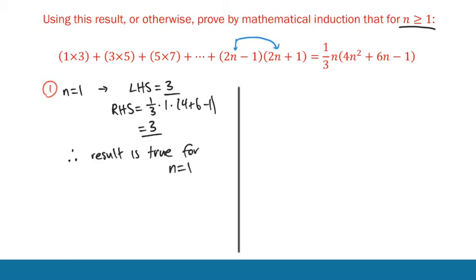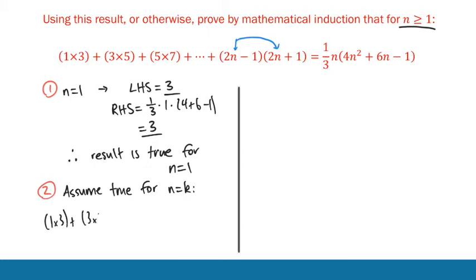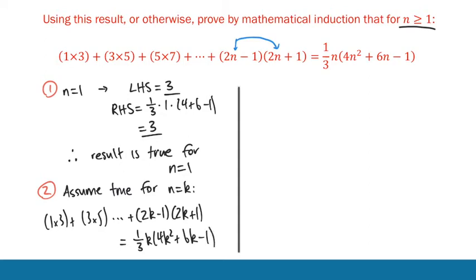Step 2: assume the result is true for n equals k. All you do is write that — 'assume true for n equals k' — and write the result out with k substituted in place of n. This is just representing that k is a general value. As long as it's bigger than or equal to 1, you're assuming the result is true for whatever value k happens to be.